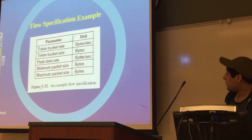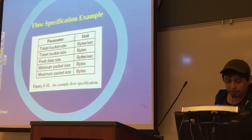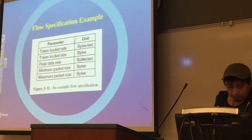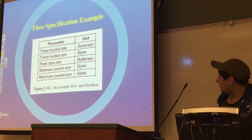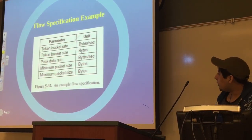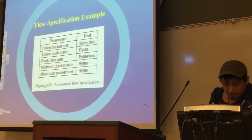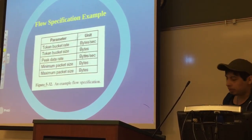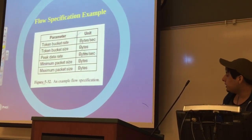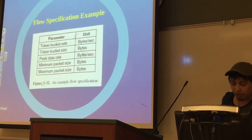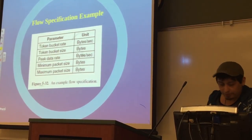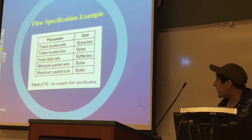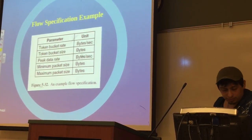The first two parameters use token buckets to give the maximum sustained rate the sender may transmit, averaged over a long time period. The third parameter, being peak data rate, is the maximum transmission rate tolerated even for brief timing intervals. It is important that the sender never exceed this rate even during brief bursts. The last two just specify the minimum and maximum packet size that can be sent.